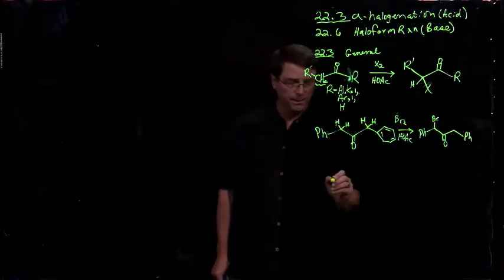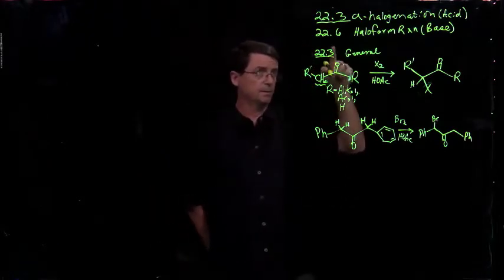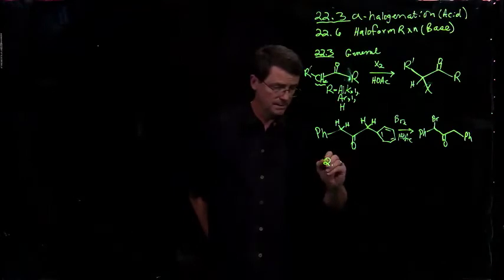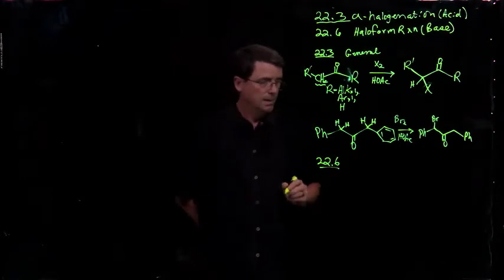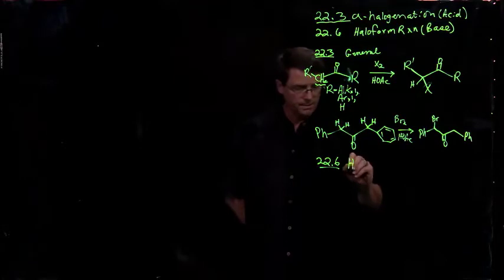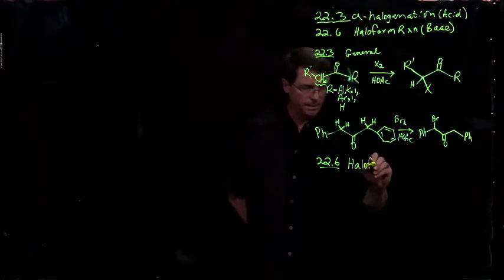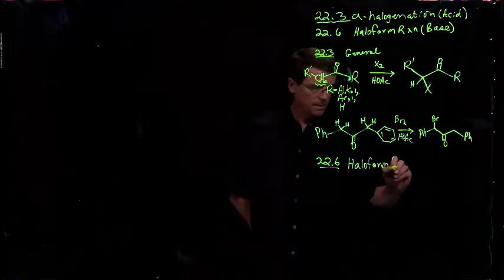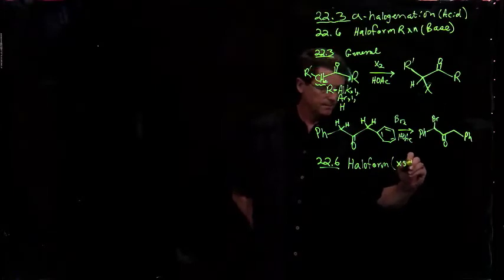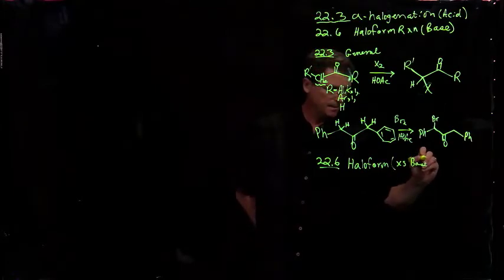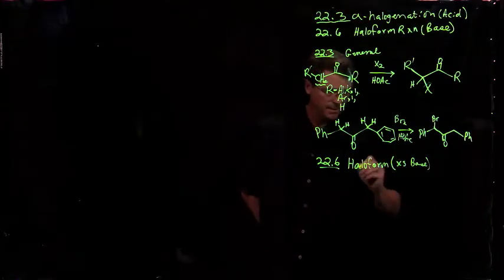Now I'm going to skip ahead to the reaction in 22.6 and then I'll come back to the two mechanisms. If we do a base catalyzed reaction, what we're going to see is the haloform reaction with an excess of base. Our base in this case is just going to be hydroxide.